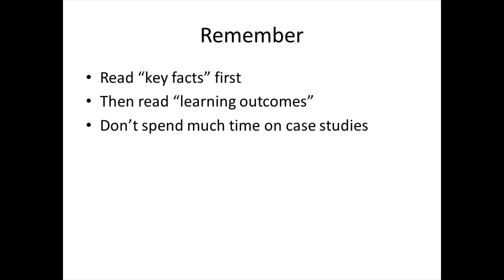I've finished chapter one. My advice on studying — not just for chapter one but for the rest of the material — is that because there are 600 pages, if you go straight to the main body of the text you'll get totally lost. My suggestion is firstly go to the end of each chapter and read the key facts first, then go back to the beginning of the chapter and read the learning outcomes, then start reading the main body. There are also a lot of case studies — unless you really have a lot of time, I suggest you don't spend too long on those. Good luck, thank you.